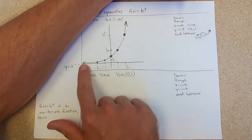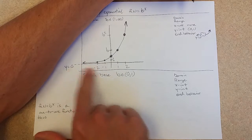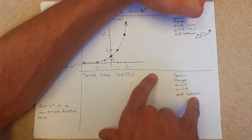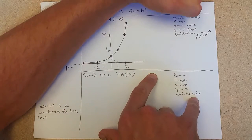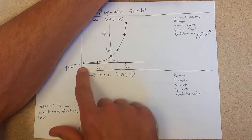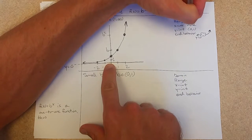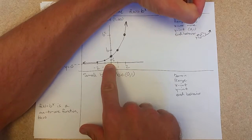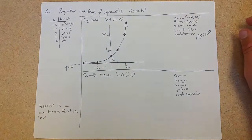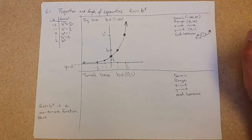Domain: I could have put any negative number or positive number in here, so it has a full domain. Now range, you cannot get 0 as a y-value, so we're going to go 0 to infinity, open on both sides. That takes care of a big base.